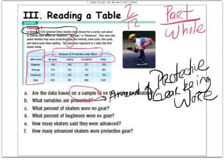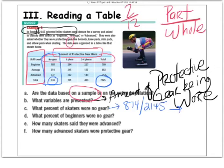So let's answer that question. What percent of skaters wore no gear? When you take a look at that, of all the skaters who wore no gear, there we have, all of them that wore no gear were 874. So of the skaters that wore no gear, I would say 874 is the part divided by the whole, which is right here, 2145. Put that in your calculator and get a decimal and then times that by 100 to get the percent and you're going to have about a 40.7% of the skaters wore no gear at all.